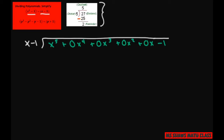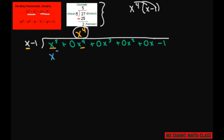The first step: what times x gives me x to the fifth? That's going to be x to the fourth. I like to keep everything in order, so I'll put it right there. Then you take x to the fourth times x minus 1 and distribute — you get x to the fifth minus x to the fourth.